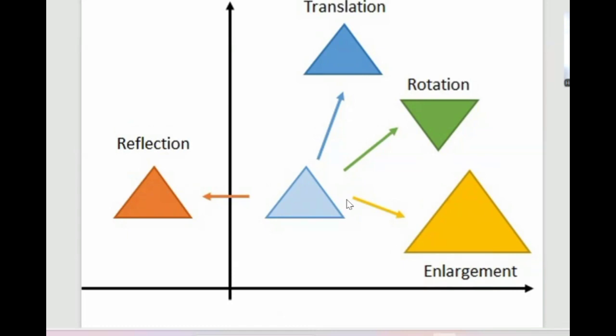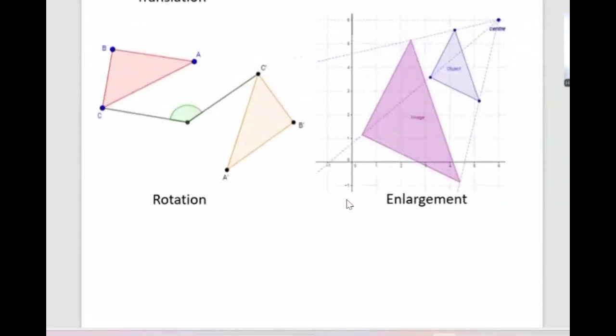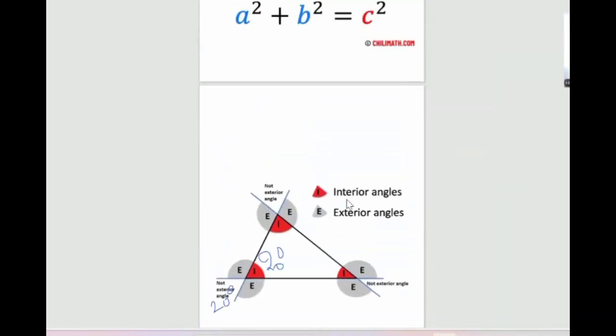The inverse operation of subtraction is addition. The inverse operation of multiplication is division. The triangle sum theorem states that the sum of all angles in a triangle is equal to — 90 or 180 degrees? [Student: 180.] Correct. The two angles whose measure adds to 180 degrees — is that supplementary or complementary? [Student: Complementary.] No — complementary means adding to 90 degrees. You should memorize this.